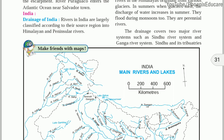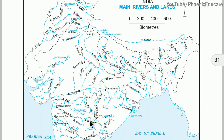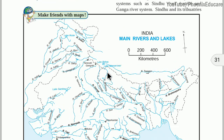Himalayan rivers have water throughout the year. Looking at the map of India, we have Lake Mansarovar, which is located in Tibet, China. Near Mansarovar, the river known as Brahmaputra in India originates — in Tibet it is called Sankpo. In this part we also have the Indus river, also called Sindhu river in India.